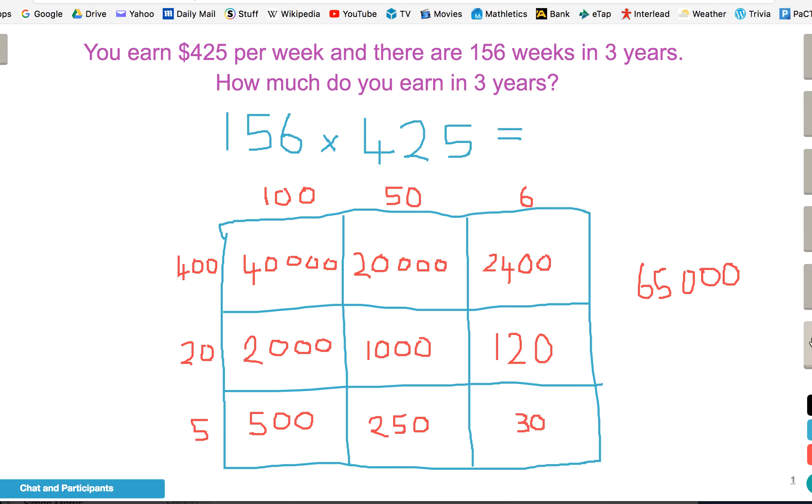Then I add up the hundreds. I've got 400 up here and another 500 makes 900, plus 300 makes 10 hundreds or one thousand, so that's 1,200.